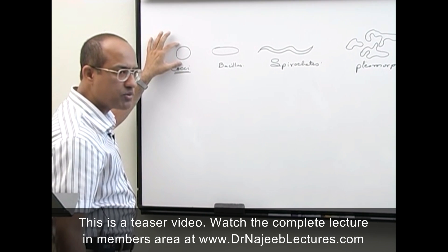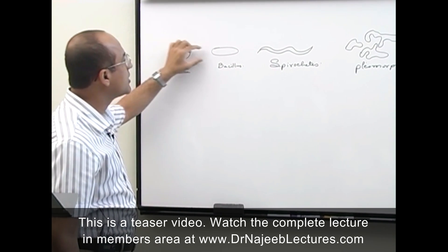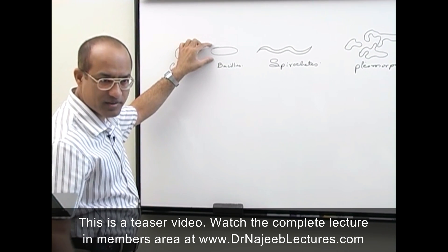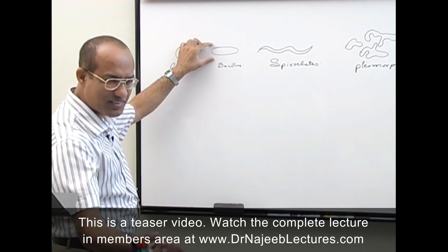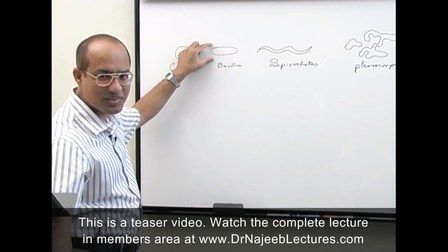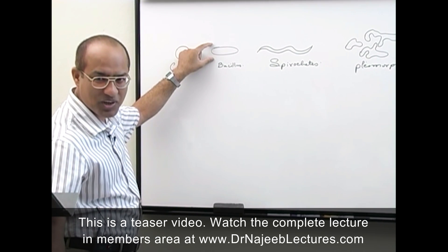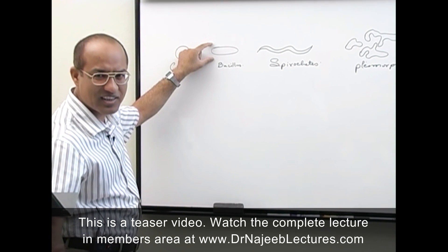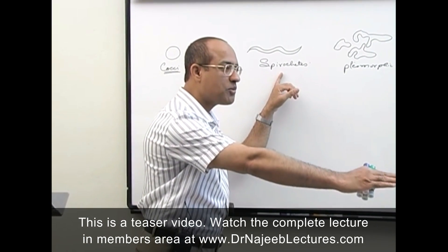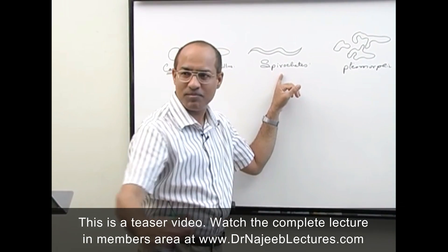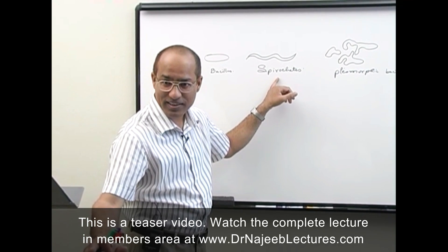A classical example of cocci is staphylococcus and streptococcus. For bacilli, examples include E. coli, Pseudomonas, Salmonella, and Shigella. For spirochetes, examples are Treponema pallidum and Borrelia burgdorferi.